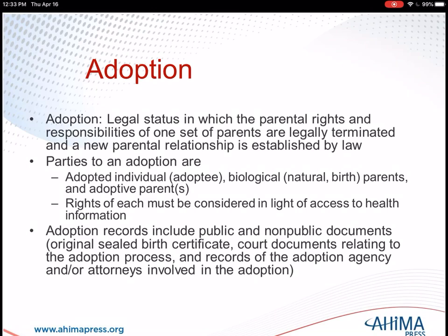Adoption records include public and non-public documents such as the original sealed birth certificate, court documents related to the adoption process, and records of the adoption agency and/or attorneys involved. Most state laws deem these records confidential and allow their release only with a court order. While health records may not be included in the definition of adoption records, they are nonetheless crucial because there's identifying information. If I go to the hospital as an adoptee and ask for medical records from my birth record, it may have information that will lead me back to my birth parents.